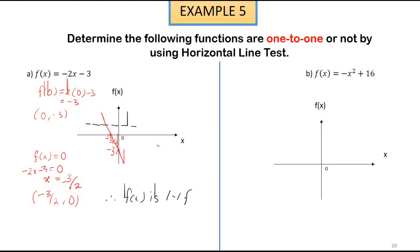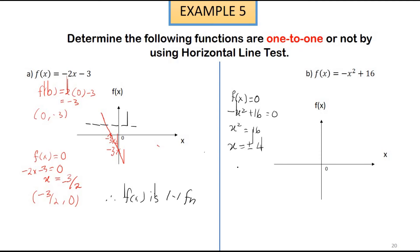Next, we have f(x) = -x² + 16. This is a quadratic function. For a quadratic function you need at least three points to sketch the graph. Let's find the x-intercepts first: when f(x) = 0, we have -x² + 16 = 0, so x² = 16, giving x = ±4. So we get two points: (4, 0) and (-4, 0).